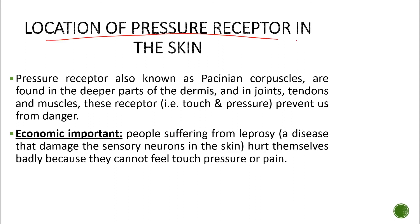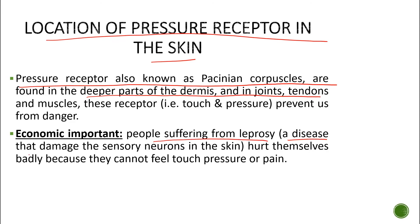Pressure receptors, also known as Pacinian corpuscles, are found in the deeper layers of the dermis and in joints, tendons, and muscles. These receptors prevent us from danger. People who suffer from leprosy — a disease that damages sensory neurons in the skin — can hurt themselves badly because they cannot feel pressure, pain, or touch.